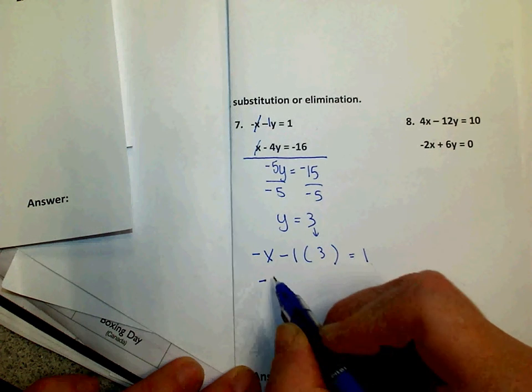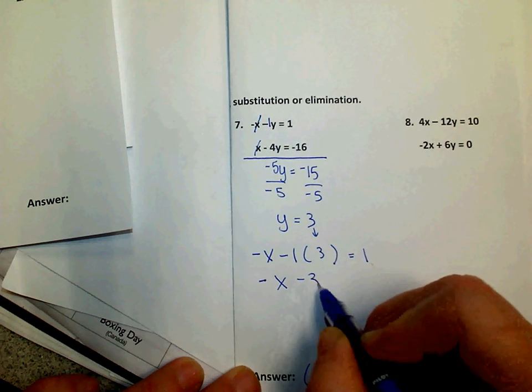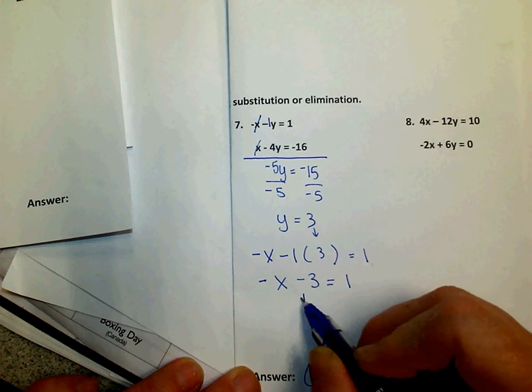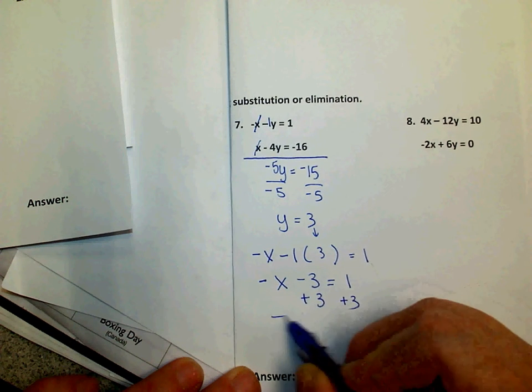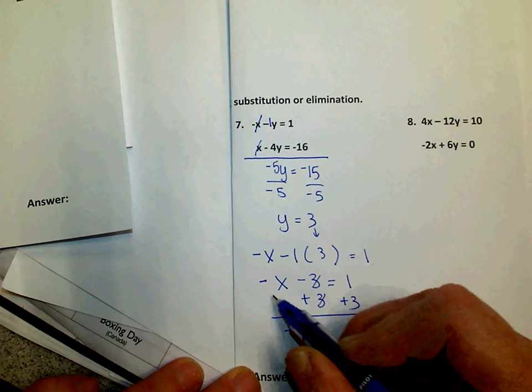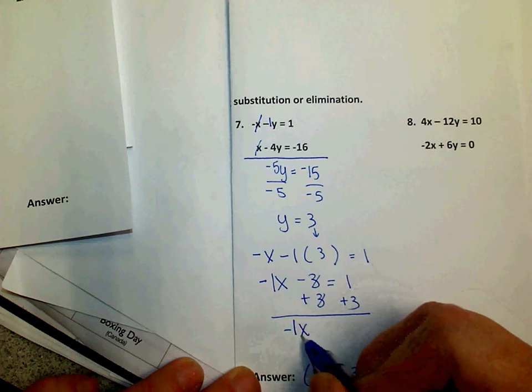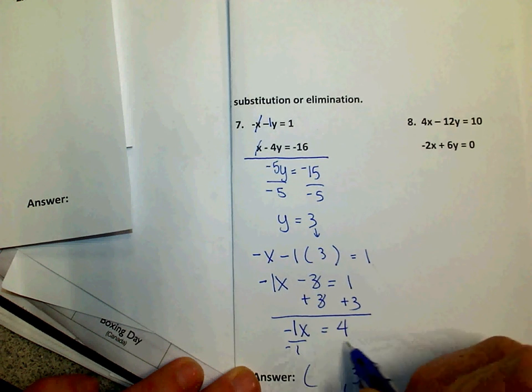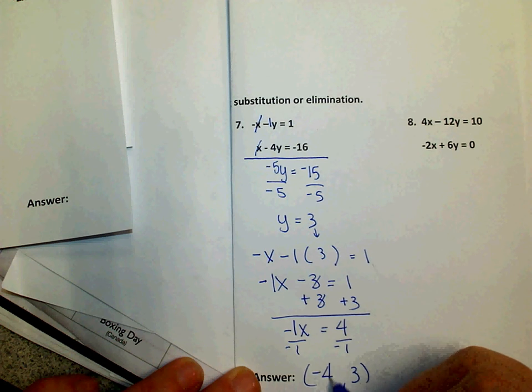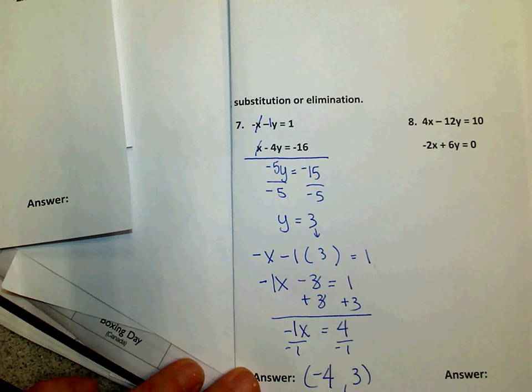So now I know negative x minus 3 is 1, and I'm going to solve for the x. So I'm going to go ahead and put the understood 1 in front of this x. Divide. x must be negative 4. Thank you.